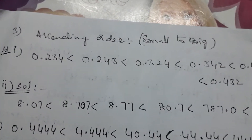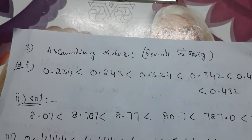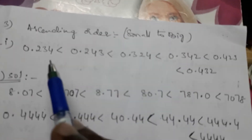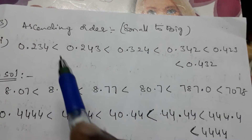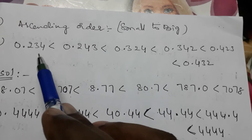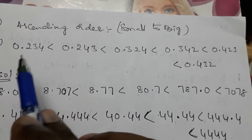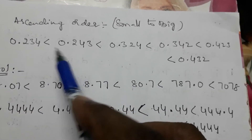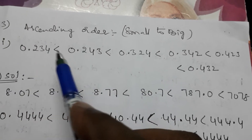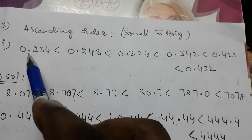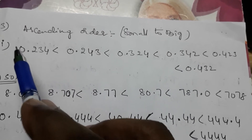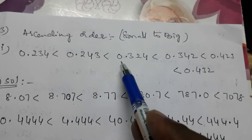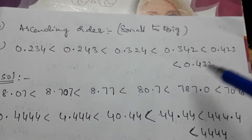Now, arrangement of decimal numbers: ascending order means small to big — listen carefully, small to big. To decide smallest or greatest, first compare the whole number part — the number before the decimal point. In this example, before the decimal, zero is there for all numbers, so all whole number parts are zero.